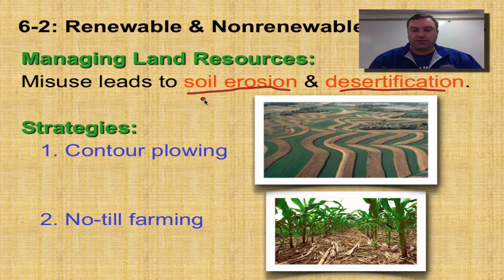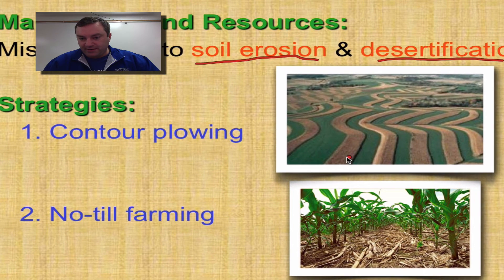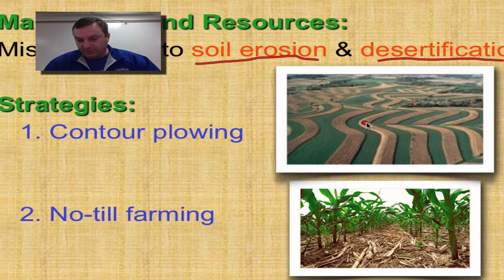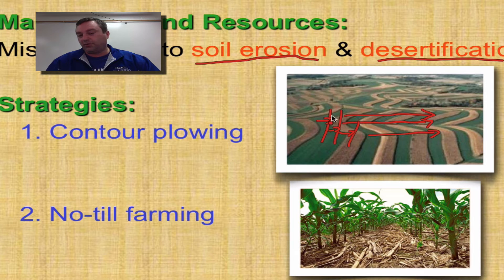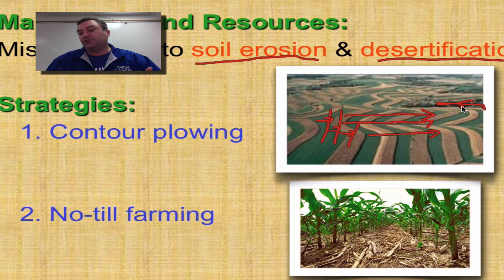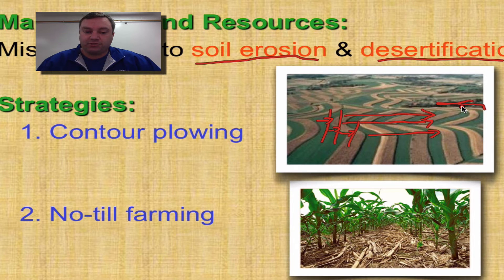One of the best ways to prevent soil erosion is contour plowing. The farmer takes his tractor and plows and seeds following the contours of the land. If he had plowed his rows straight down the slope, every time it rained, soil would be washed downhill. But because his rows follow the contour, they act like a dam when water flows, stopping it from running down the hill. Contour plowing can greatly help with soil erosion.